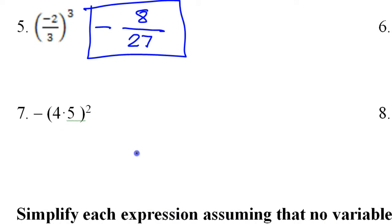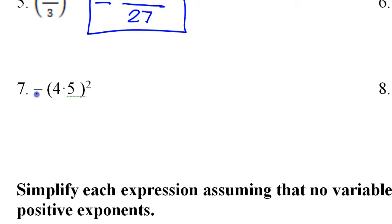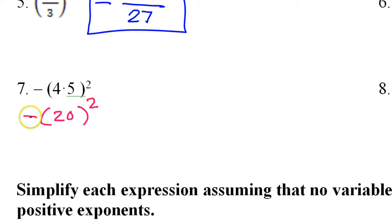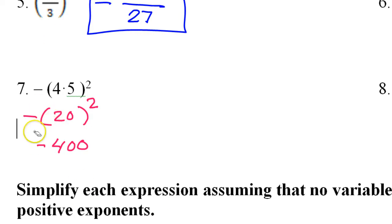Number 7 — notice this negative sign is NOT inside the parentheses, so watch out for that. Inside the parentheses I've got 20. Now be careful with order of operations: do I square it first or make it negative first? This negative is like a negative 1, so we definitely square the 20 first and then put the negative sign on it. 20 squared is 400, so that negative sign is still going to be there — this will be negative 400. The negative does not go away because it is not inside the parentheses.